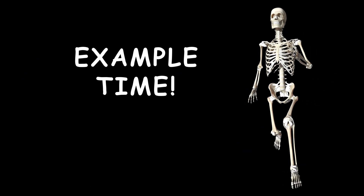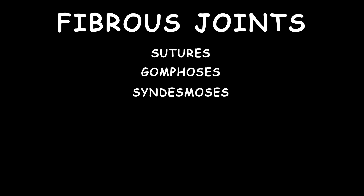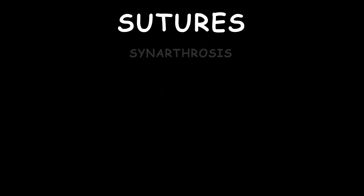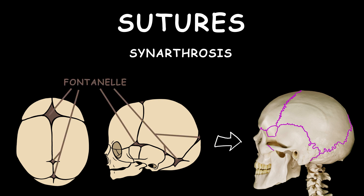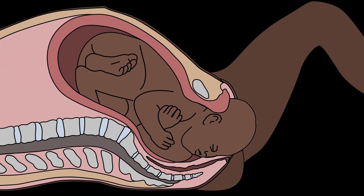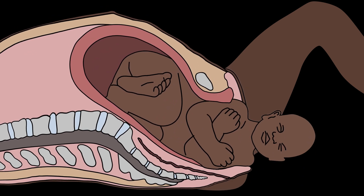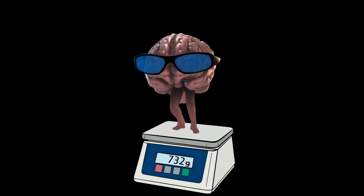Fibrous joints include sutures, gomphoses, and syndesmoses. Sutures are an example of synarthrosis, and the only examples are between bones of the skull. The soft fontanelle between cranial bones fuse by 3 years of age and then ossify. The fontanelle are there for the birth process, when the skull deforms as the baby passes through the birth canal, and also so the brain and skull can grow during the baby's first year.